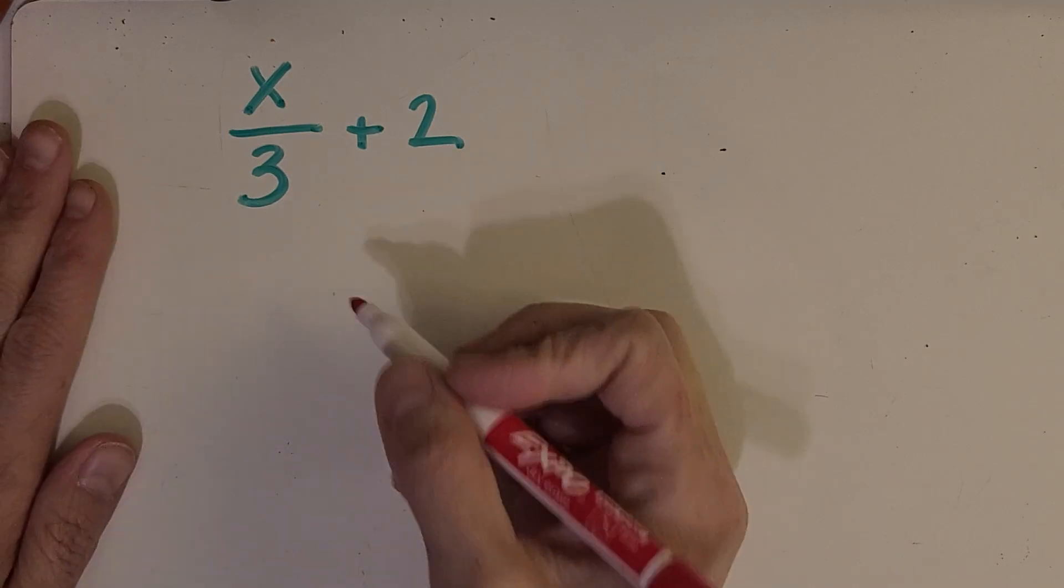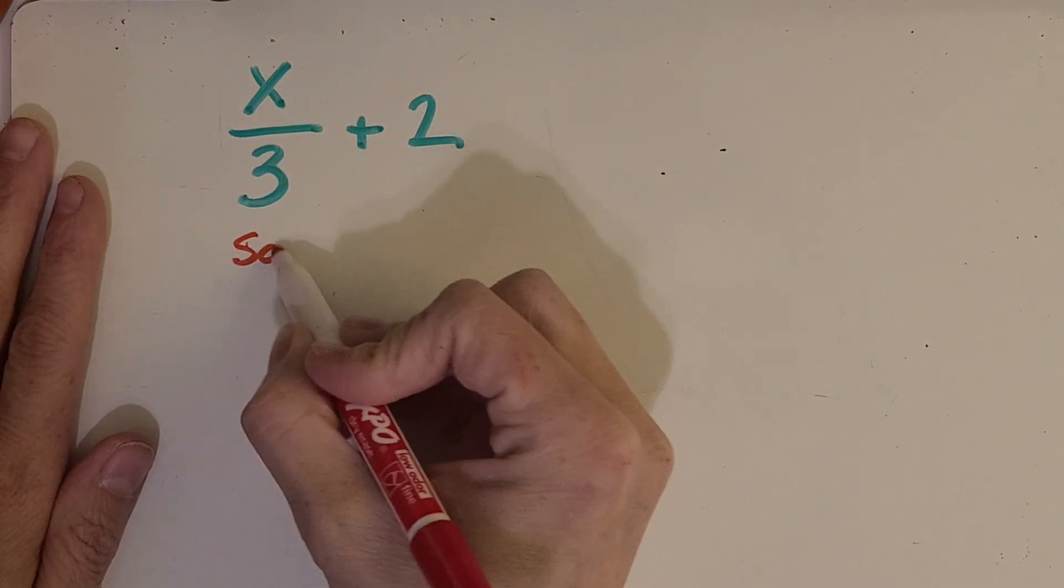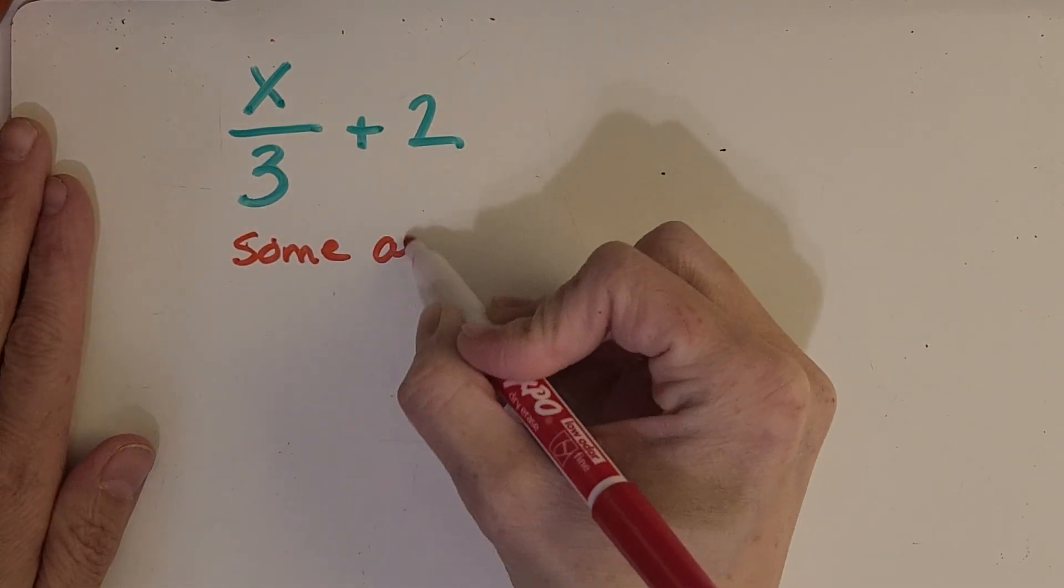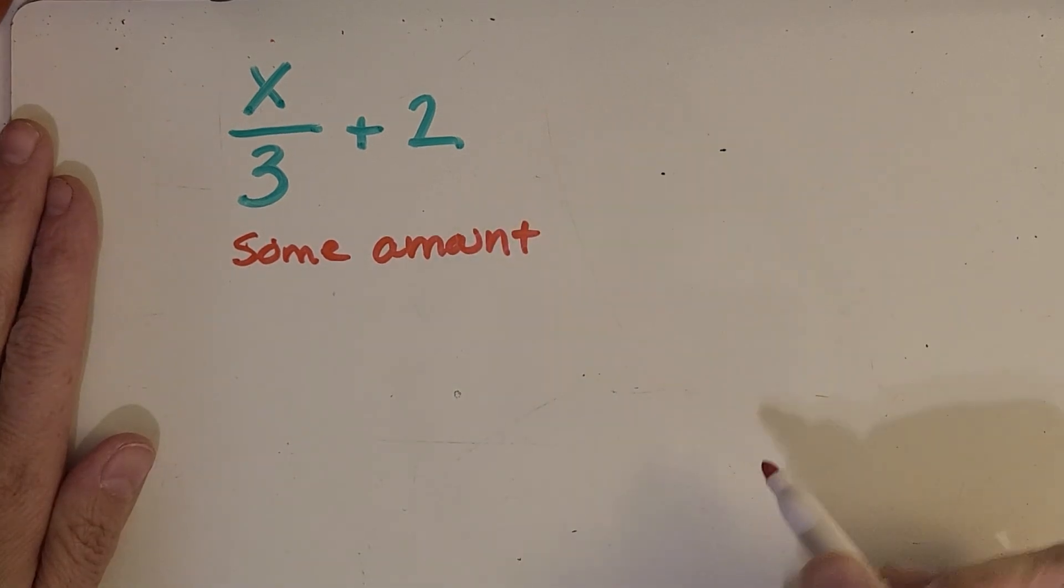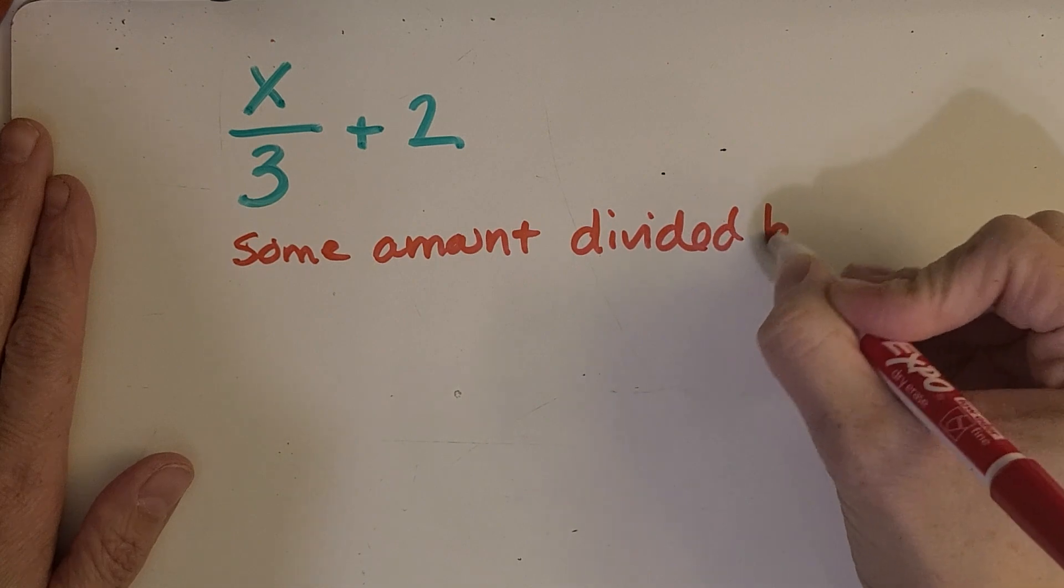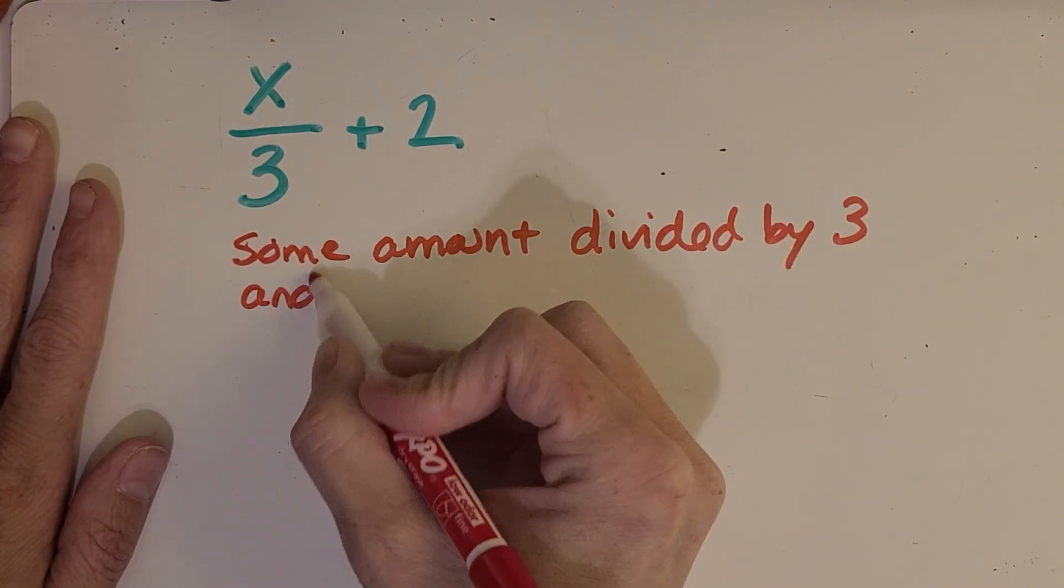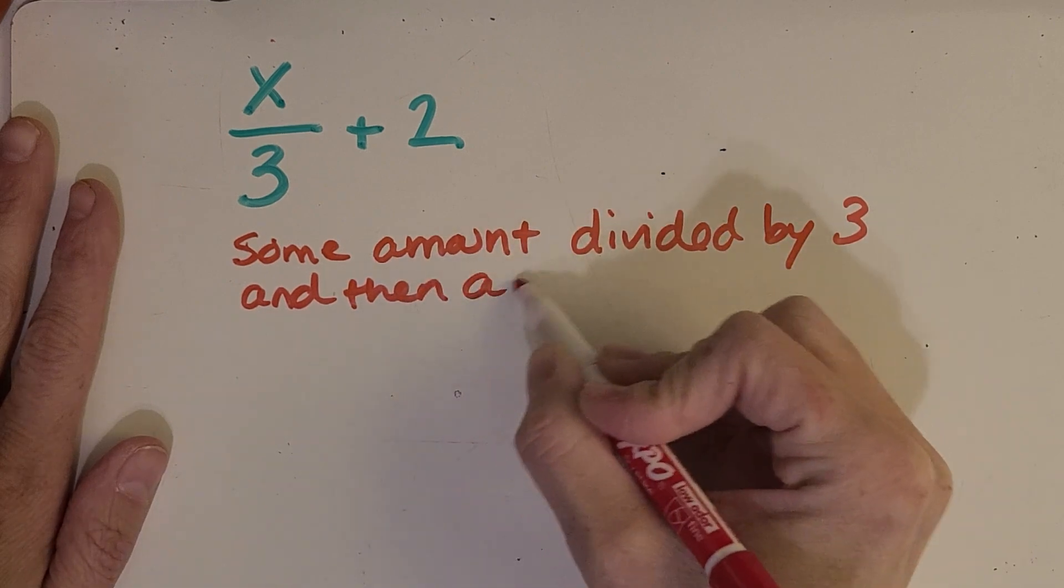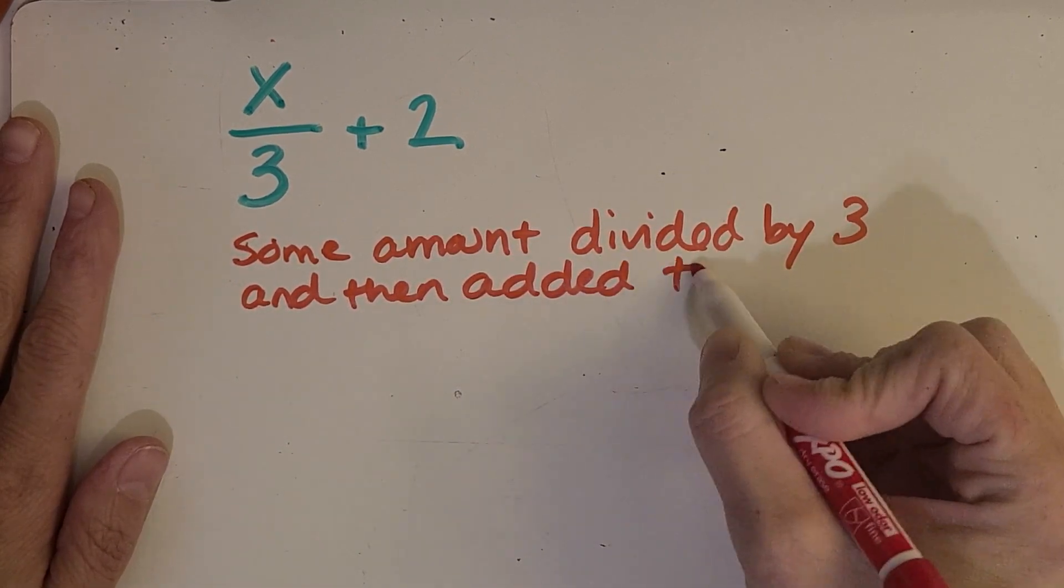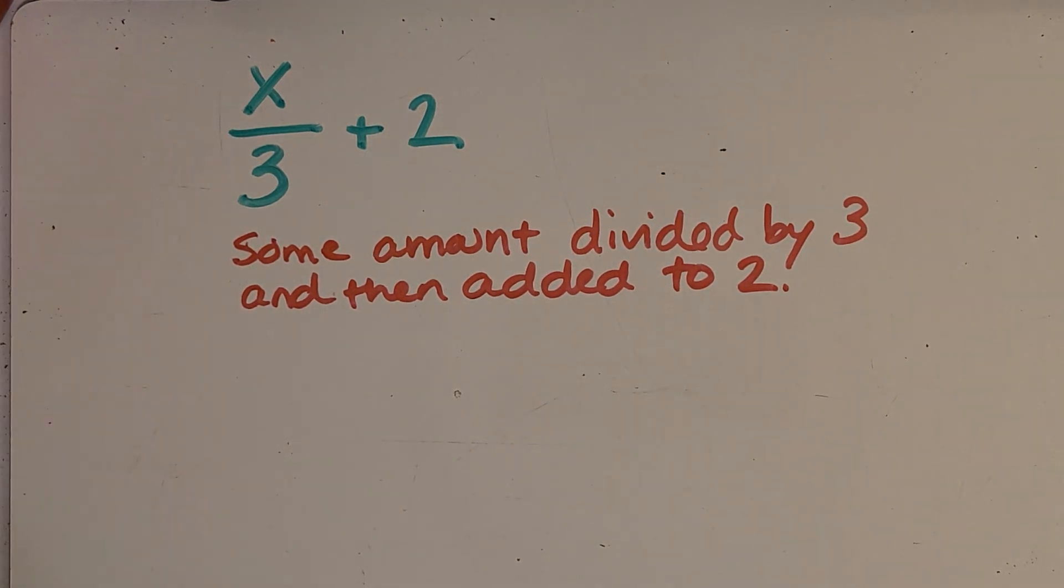Okay so for this one you might have said something like you know some amount or an unknown amount divided by three and then added to two. Can you think of another way to say this same expression that's equivalent?